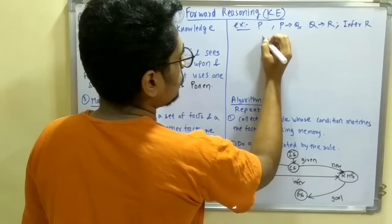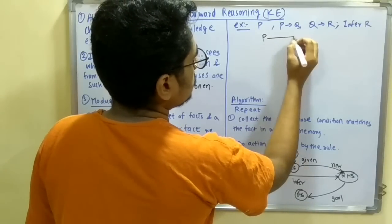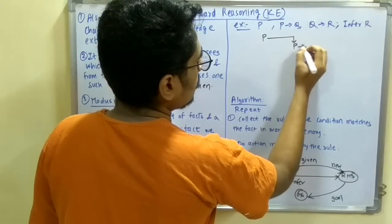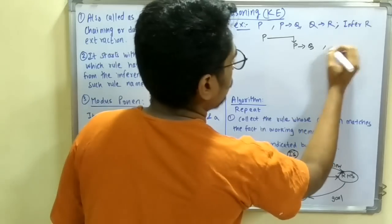First of all, you have the given fact P. From this, you can actually write this because this is from modus ponens.